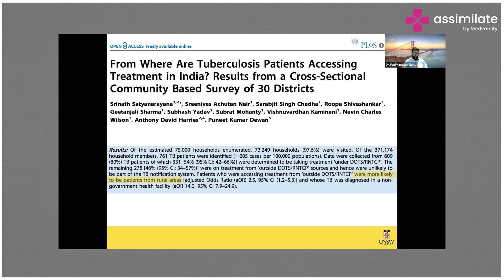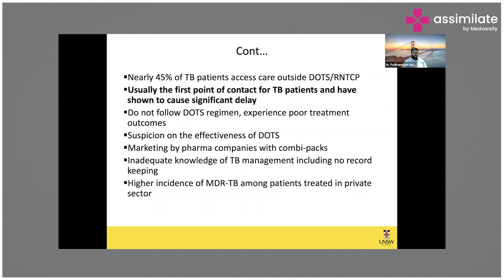Nearly half of TB patients don't go through the National TB Program — even though it's free and cost-effective — and instead seek treatment from the private sector for various reasons including convenience and mistrust of government facilities. As a result, nearly half of TB cases don't get notified, which is why of an estimated three million TB cases, only two million are reported. There is a big gap in TB notification in India, intertwined with the lack of a robust reporting system from the private sector.